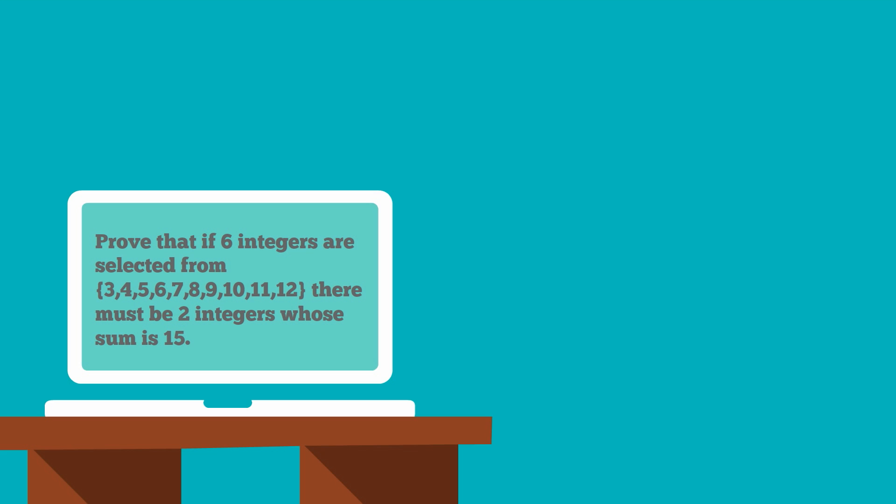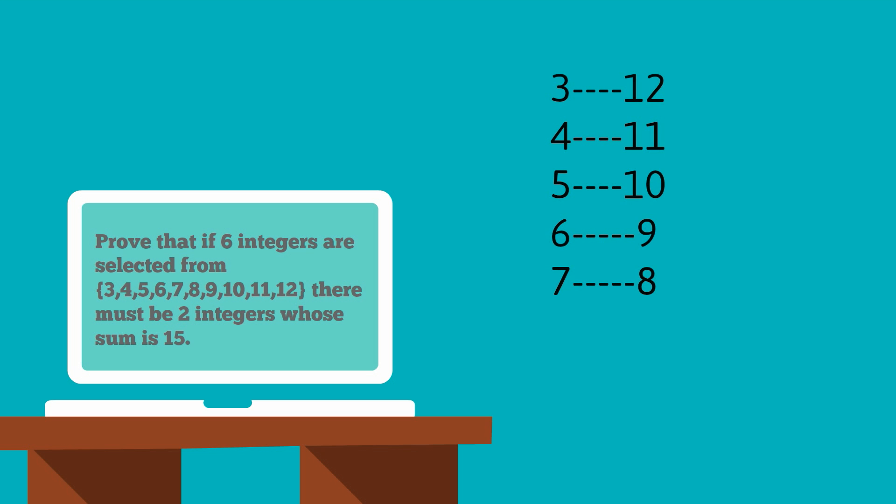A key insight into this problem is that the numbers in the set naturally form into pairs that sum to 15. So 3 and 12, 4 and 11, 5 is paired with 10, 6 with 9, and 7 is paired with 8.